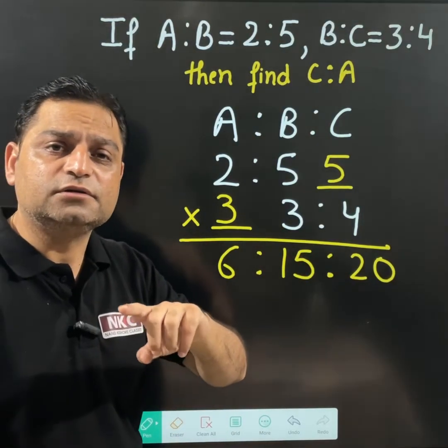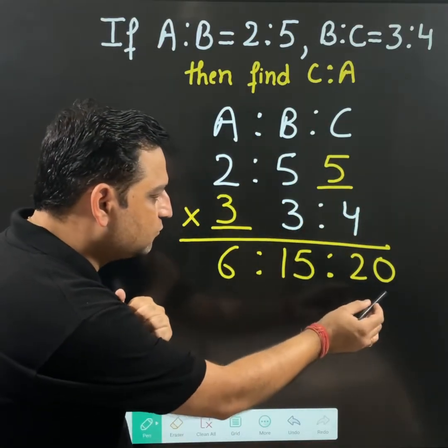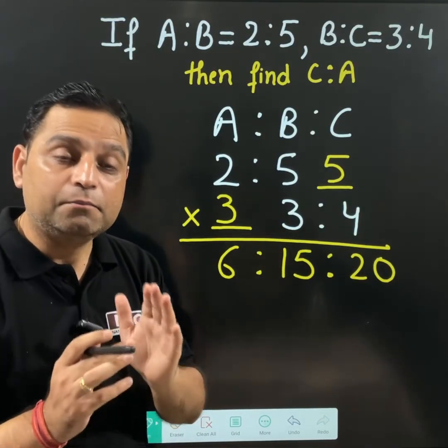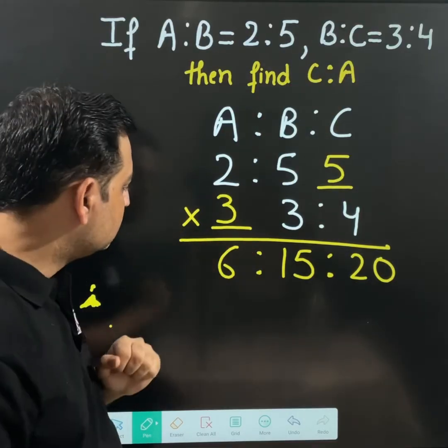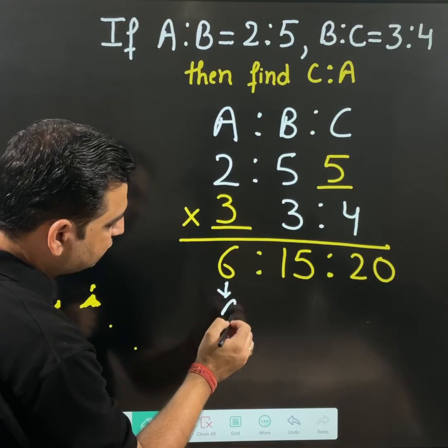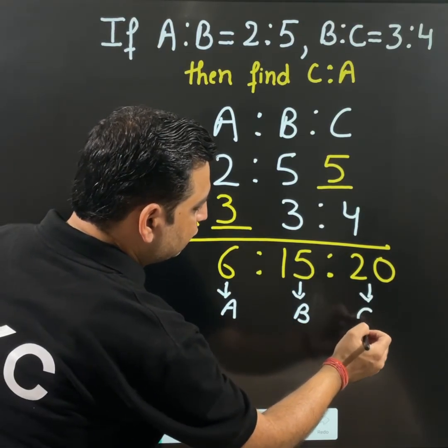If let us suppose you get a question to find A ratio B ratio C, then this is the answer which is written at the end. You can see 6 ratio 15 ratio 20. But in my question, they have told to find C ratio A. To find C ratio A, first of all, you should be able to understand that this is the value of A, this is the value of B and this is the value of C.